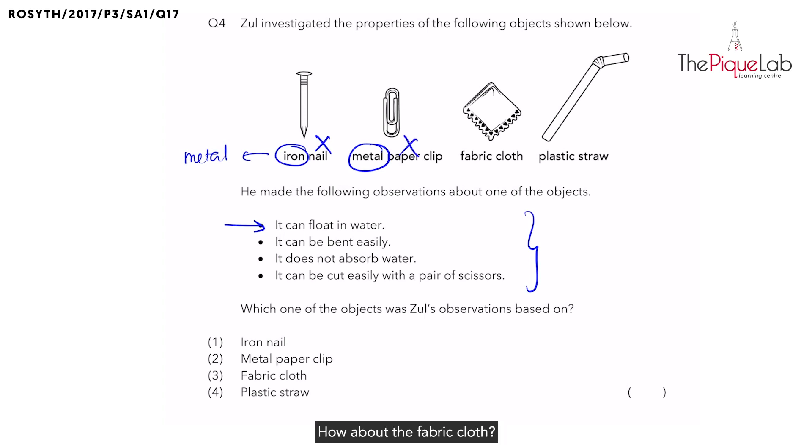How about the fabric cloth? Fabric is a material that floats on water. So does plastic. So we cannot eliminate these two yet. Now let's look at the next observation.